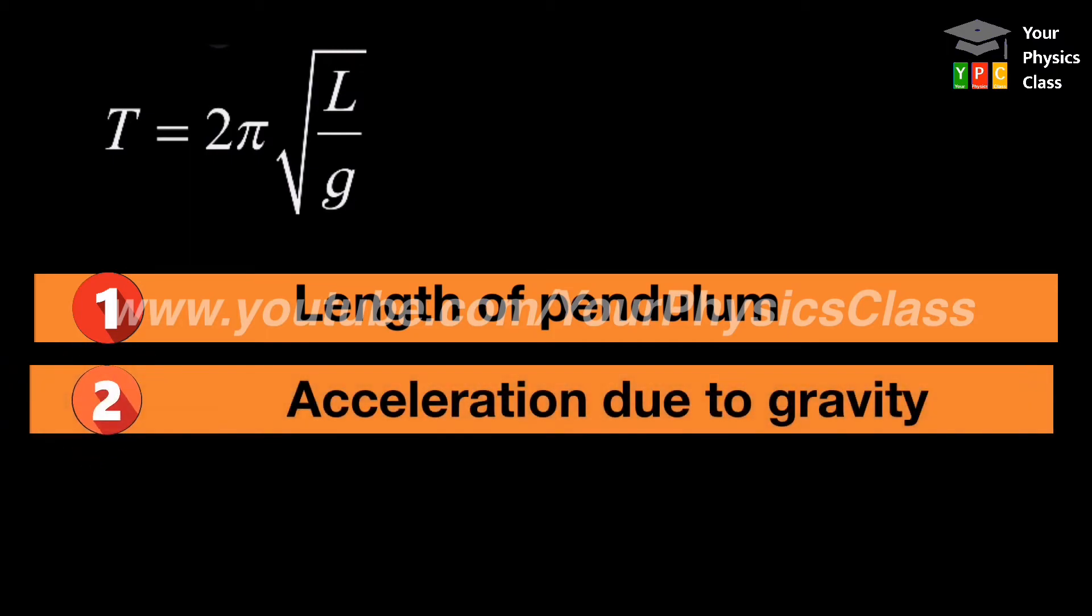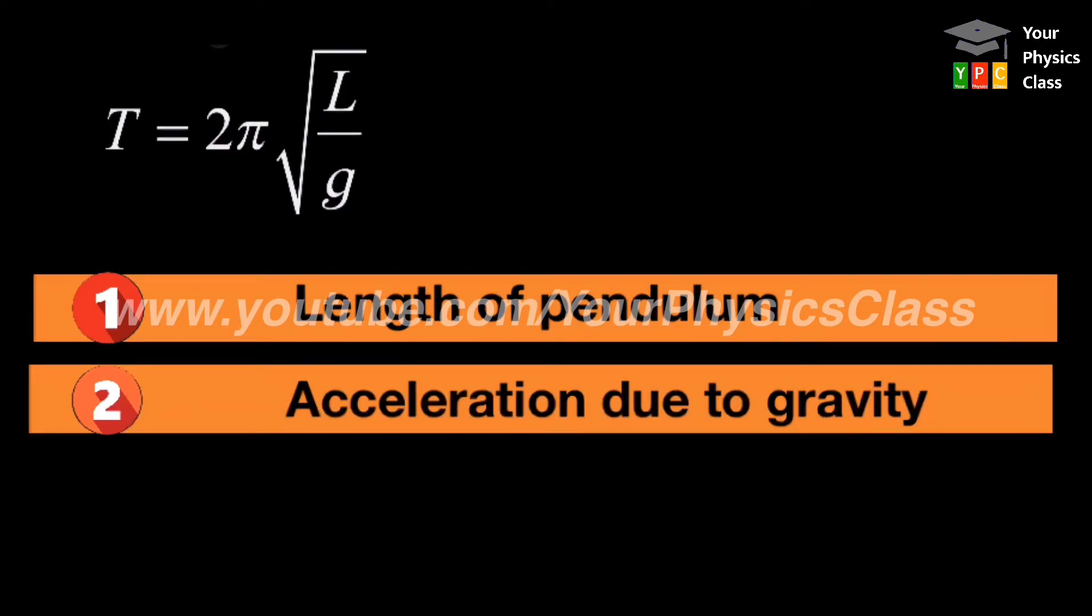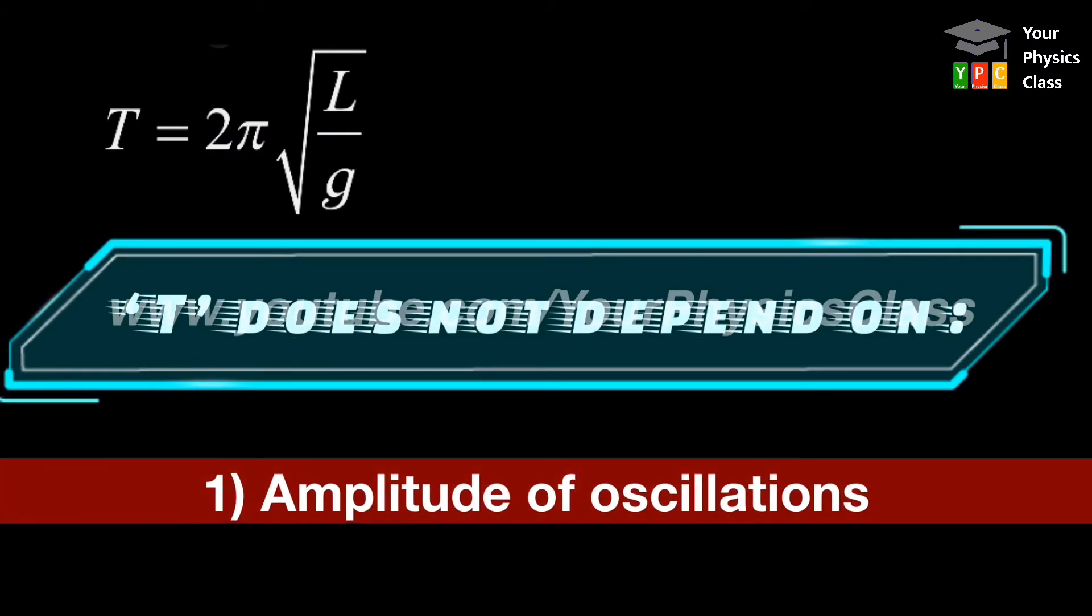And number two, acceleration due to gravity at that place. T is inversely proportional to square root of acceleration due to gravity. Time period does not depend on amplitude of oscillation.